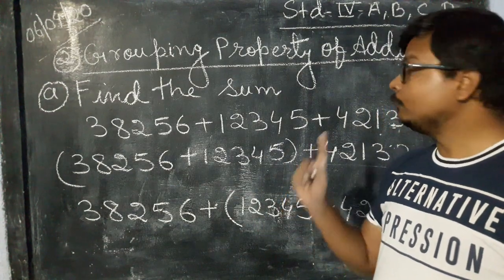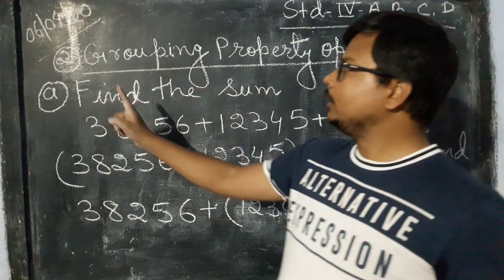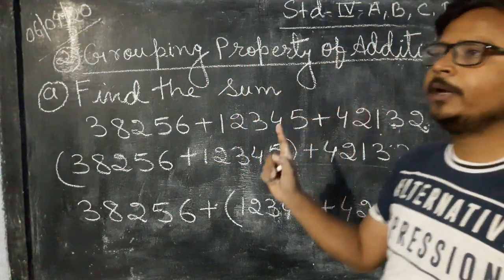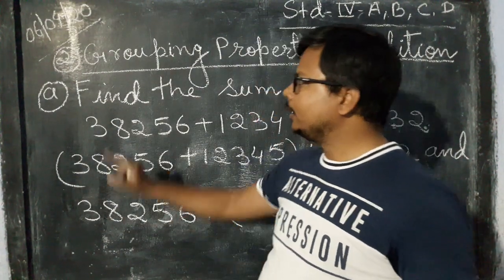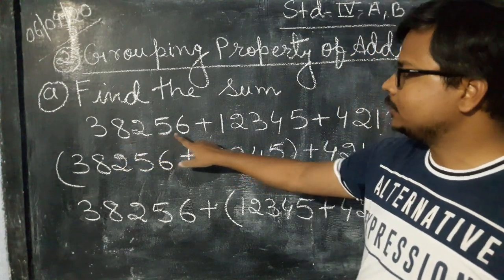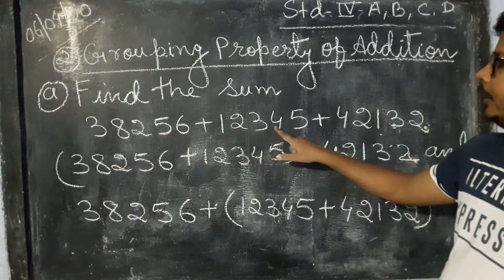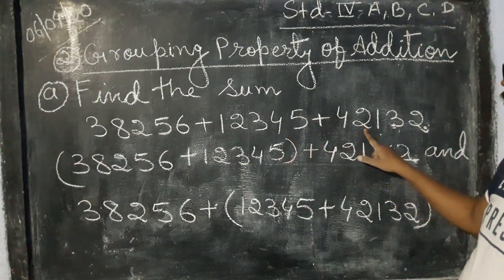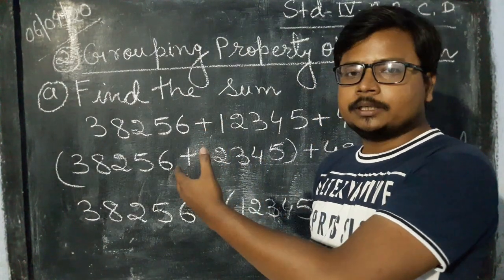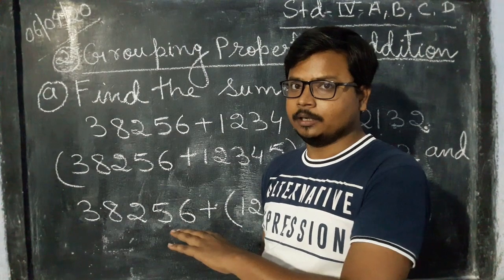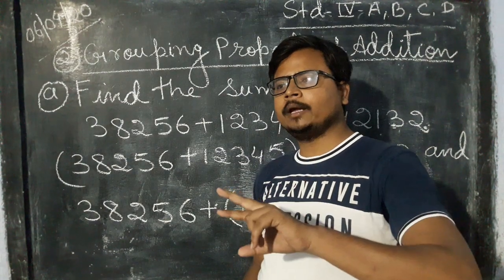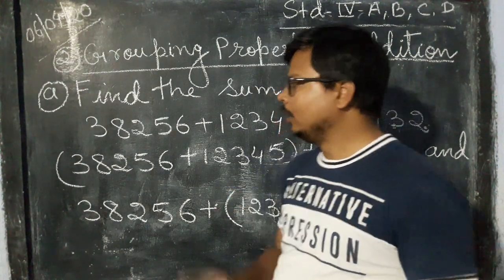Here is the second property of addition of numbers. The second one is grouping property of addition. See, here is the question, find the sum 38,256 plus 12,345 plus 42,132. We can group these numbers and solve it very easily. We can group in many different ways. But here I am teaching you two ways to make different groups and solve the equations easily.